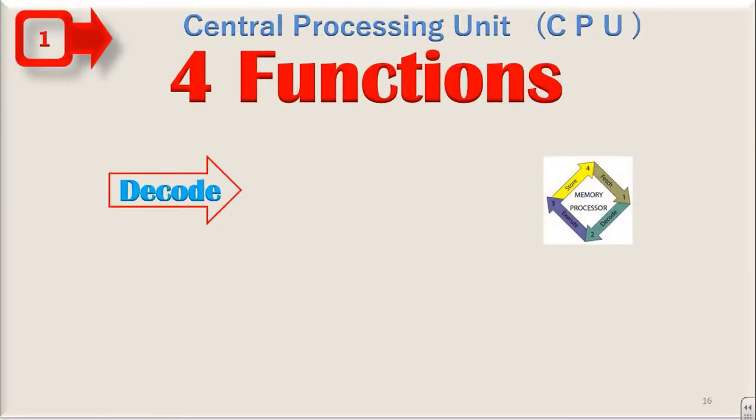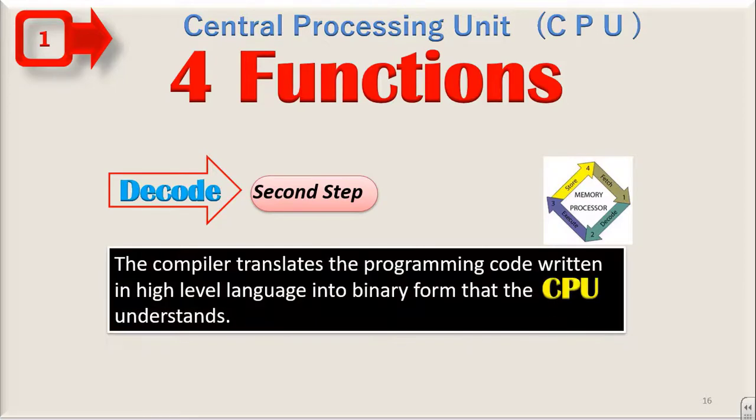Second decode. This is the second step. The compiler translates the programming code written in high-level language into binary form that the CPU understands. High-level language means the language which is in English form and binary means which is in 0 and 1s. So the instructions or the code written in English language is converted into binary, that is in the form of 0 and 1s which the CPU understands.